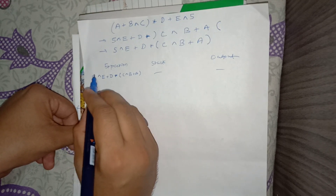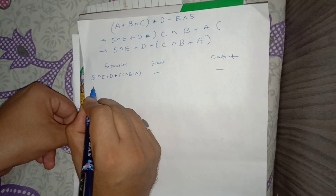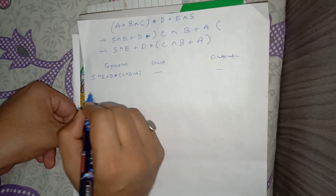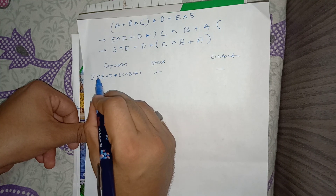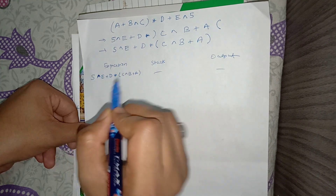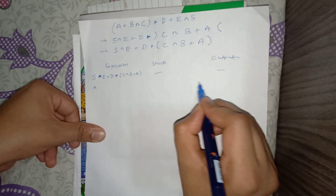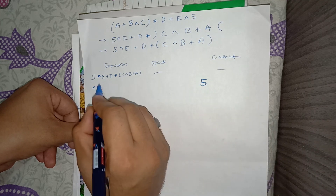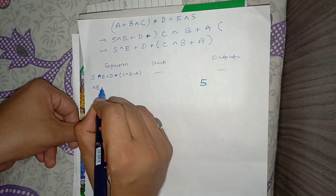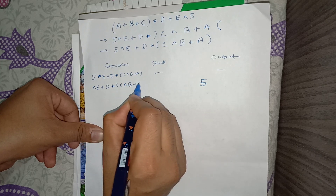We will process each token one by one. The first token is 5. Since only operators can be pushed onto the stack, 5 goes directly to the output. Our remaining expression is: XOR, E, plus, D, into, C, XOR, B, plus, A.